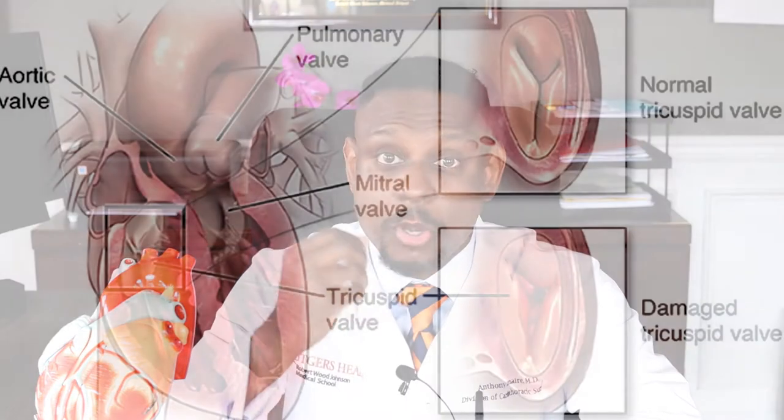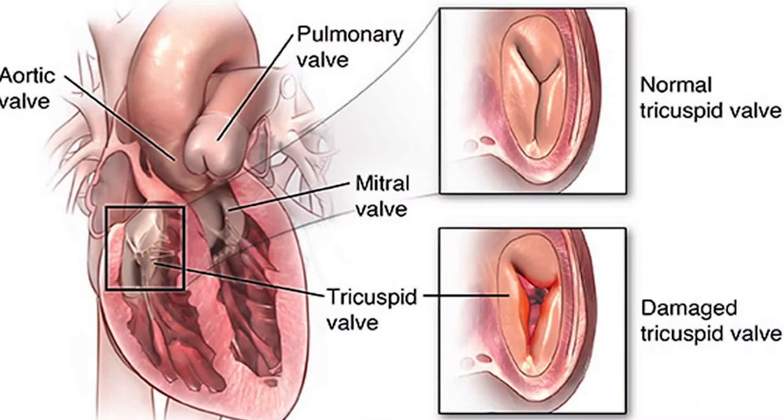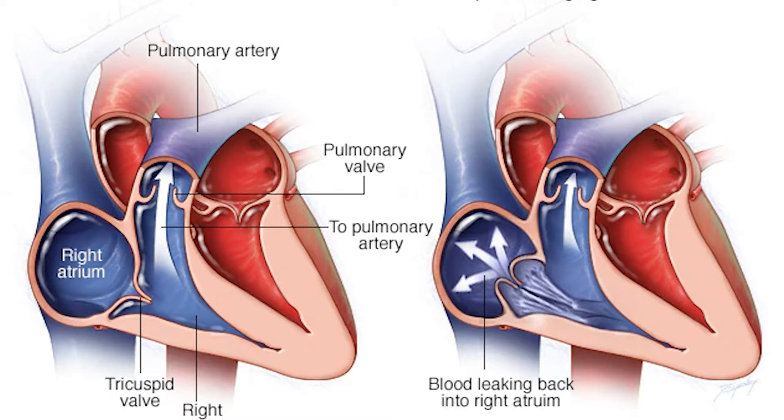There are several indications to operate on the tricuspid valve. One would be tricuspid valve stenosis — that's when the valve is hard to open, so the heart has to push really hard to get the blood through the valve into the right ventricle. There's also tricuspid valve regurgitation, and that's when the blood goes from the right atrium through the valve into the right ventricle, but because the valve is leaking, a lot of the blood goes back into the right atrium, making the right atrium bigger, which is not better.